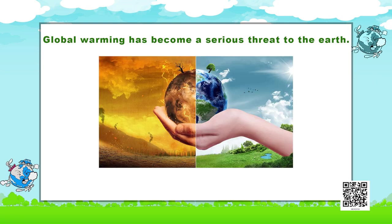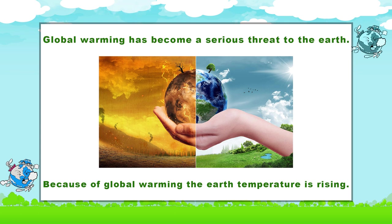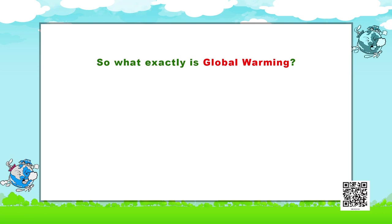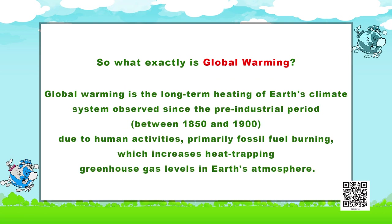Global warming has become a serious threat to earth. Global warming is the long-term heating of earth's climate system observed since the pre-industrial period, that is between 1850 to 1900, due to human activities — primarily fossil fuel burning — which increases heat-trapping greenhouse gas levels in earth's atmosphere. Global warming has led to climate change.